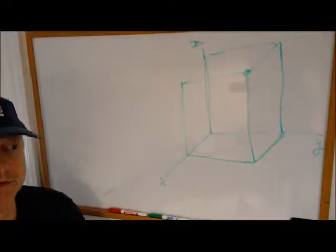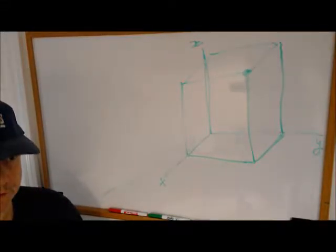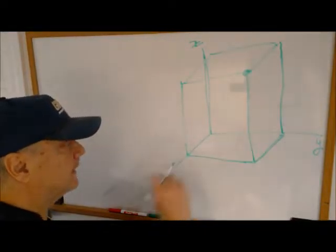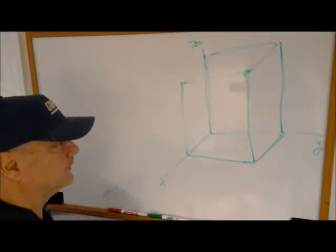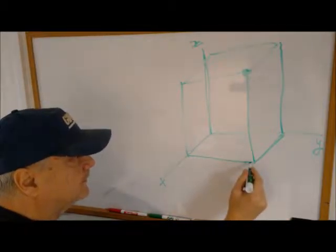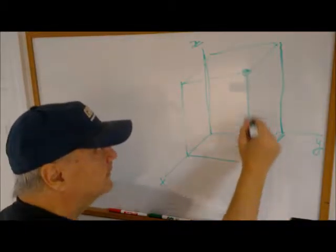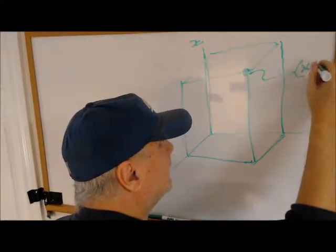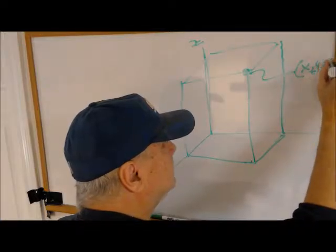This lecture is on cylindrical and spherical coordinate systems. Let's start with Cartesian, the XYZ coordinate system. Here's a point in space, and we characterize it as so many units in the X direction, so many units in the Y direction, and so many units up. Let's label it as X, Y, Z.